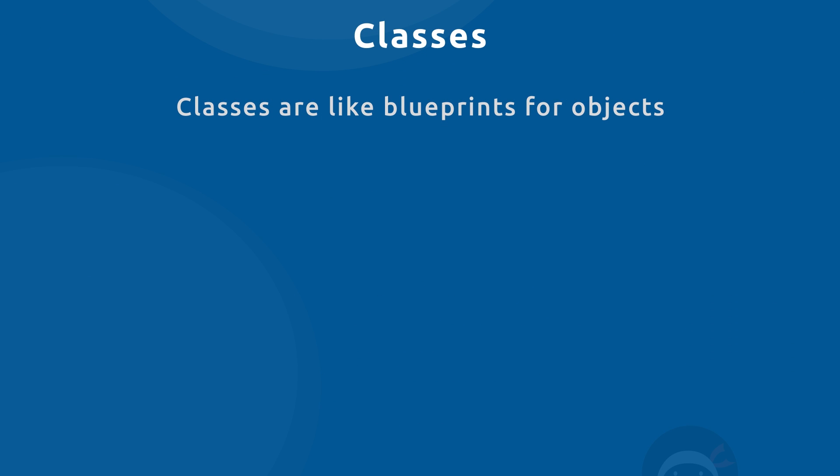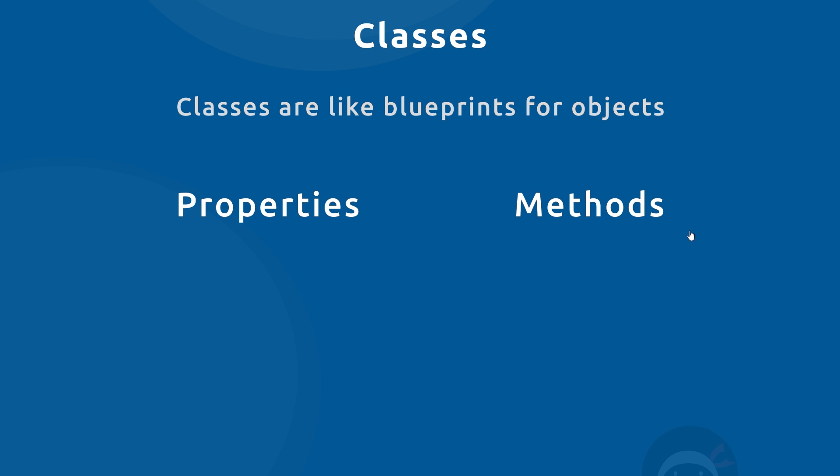The first piece to the puzzle when starting out in object-oriented programming is understanding what classes are. Classes are like blueprints for objects in programming — much like we'd have a blueprint for real-life objects, for example a train, which describes how to build that train and how it should behave. We also have blueprints or classes in programming which describe how objects should look and behave — what properties they should have and what methods they should have. Methods is just another name for a function associated with a class.